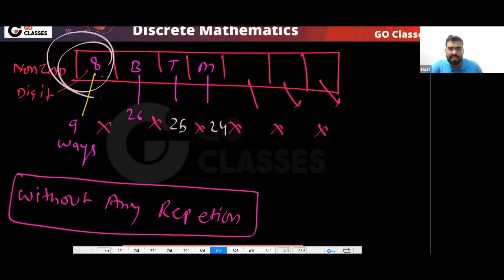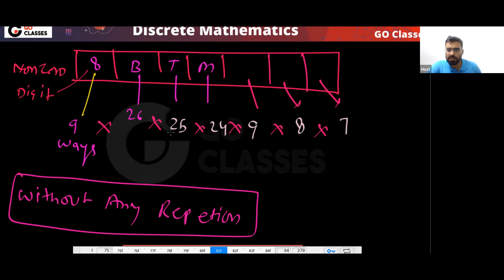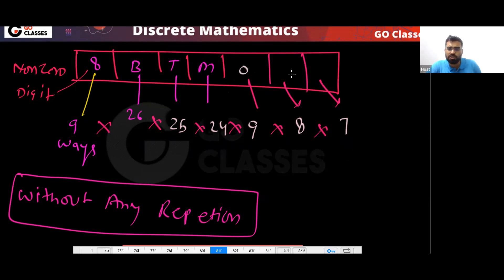Now, once you put 8 in the first digit position, you cannot put 8 again. So there are 9 ways for the next digit, then 8 ways, then 7 ways. You can put zero here, maybe two here, maybe three here. That is the idea — very easy.